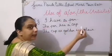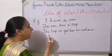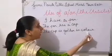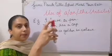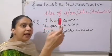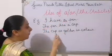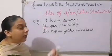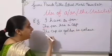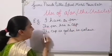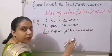In the third sentence: the cap is golden in color. Here I have already described in the second sentence that the pen has a cap. Now when I describe this particular cap, I write 'the cap'. Again, this is a particular cap we have already discussed, so in the third sentence we use the article THE: the cap is golden in color. I hope this is clear.